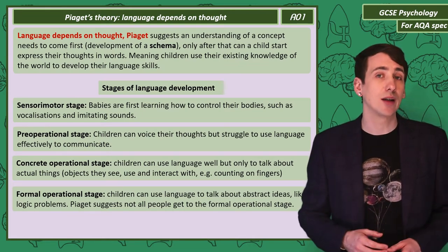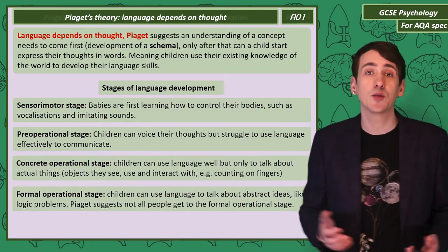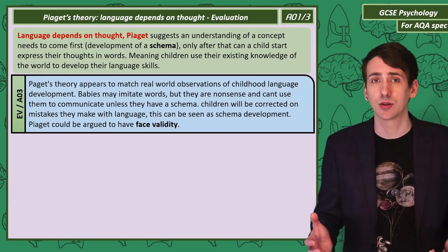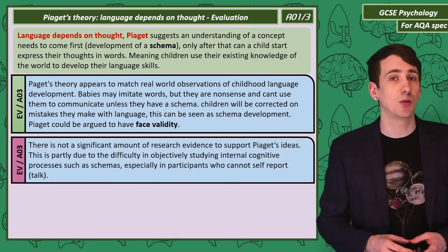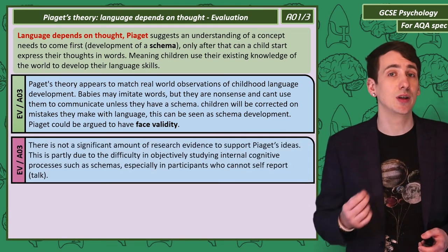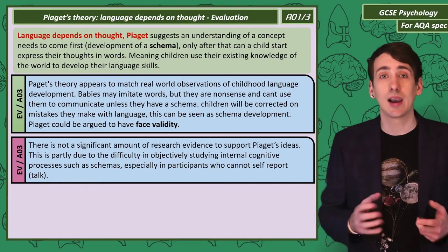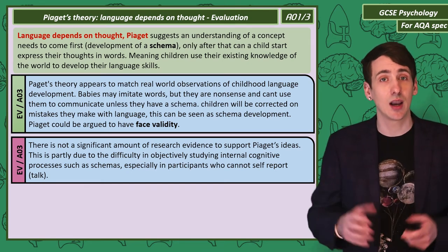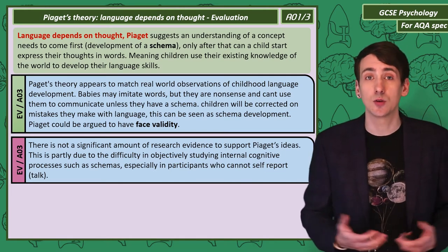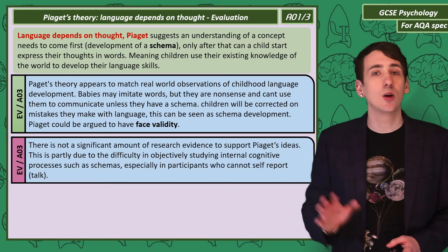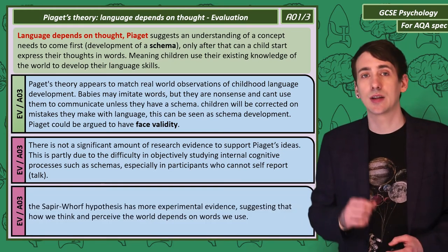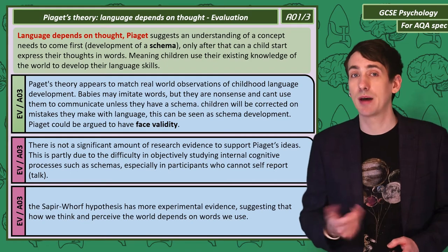One of the main advantages of Piaget's theory is that it has face validity — it seems to match what most people experience of how children develop language. However, there isn't much evidence to support Piaget's ideas on language. Part of the problem is that studying internal mental processes like schema development in relation to language is difficult to do objectively, especially as babies can't self-report. The alternative Sapir-Whorf hypothesis has more experimental evidence, suggesting how we think and perceive depends on language.